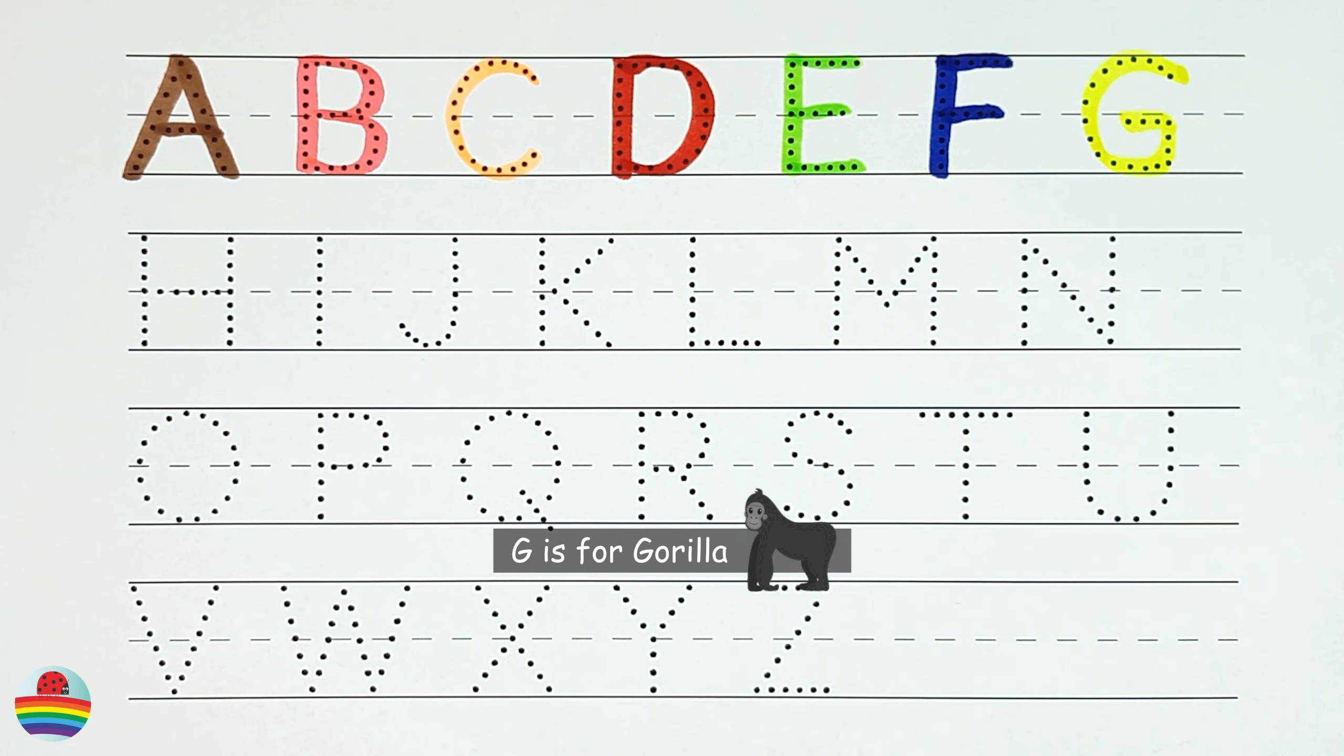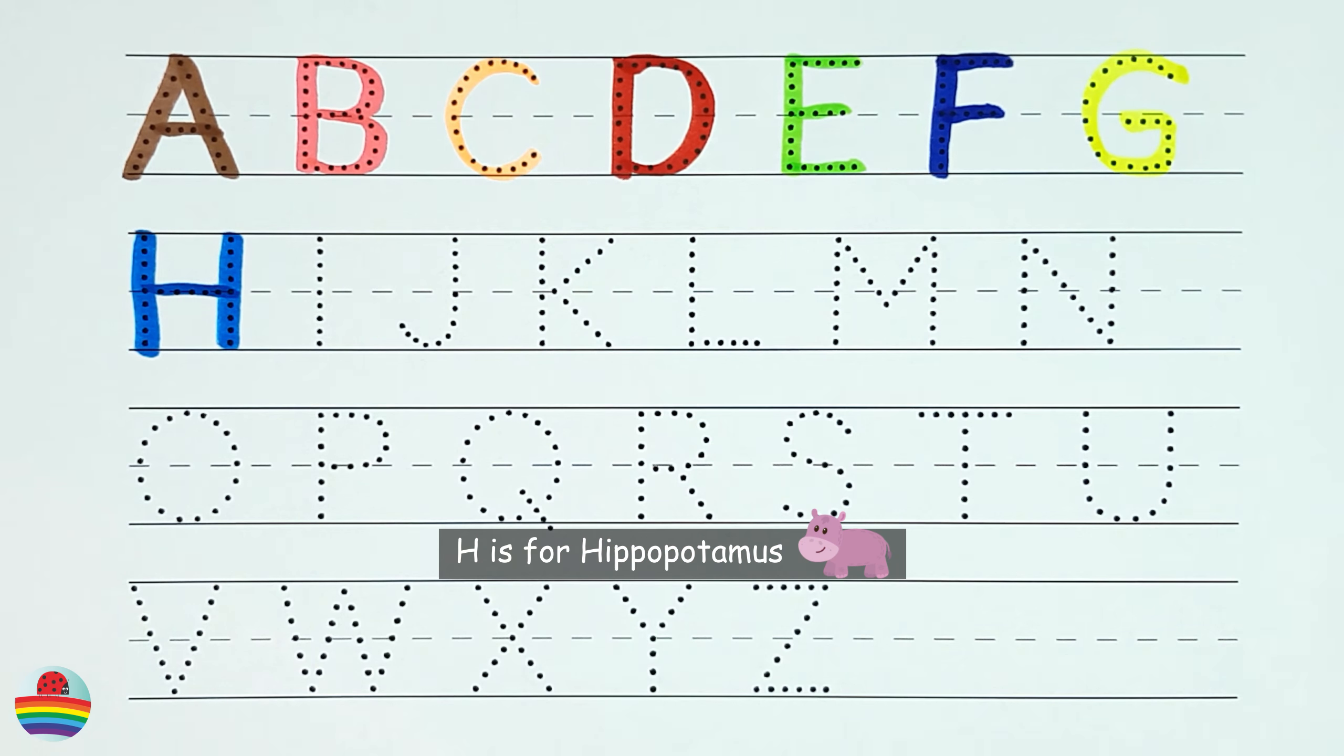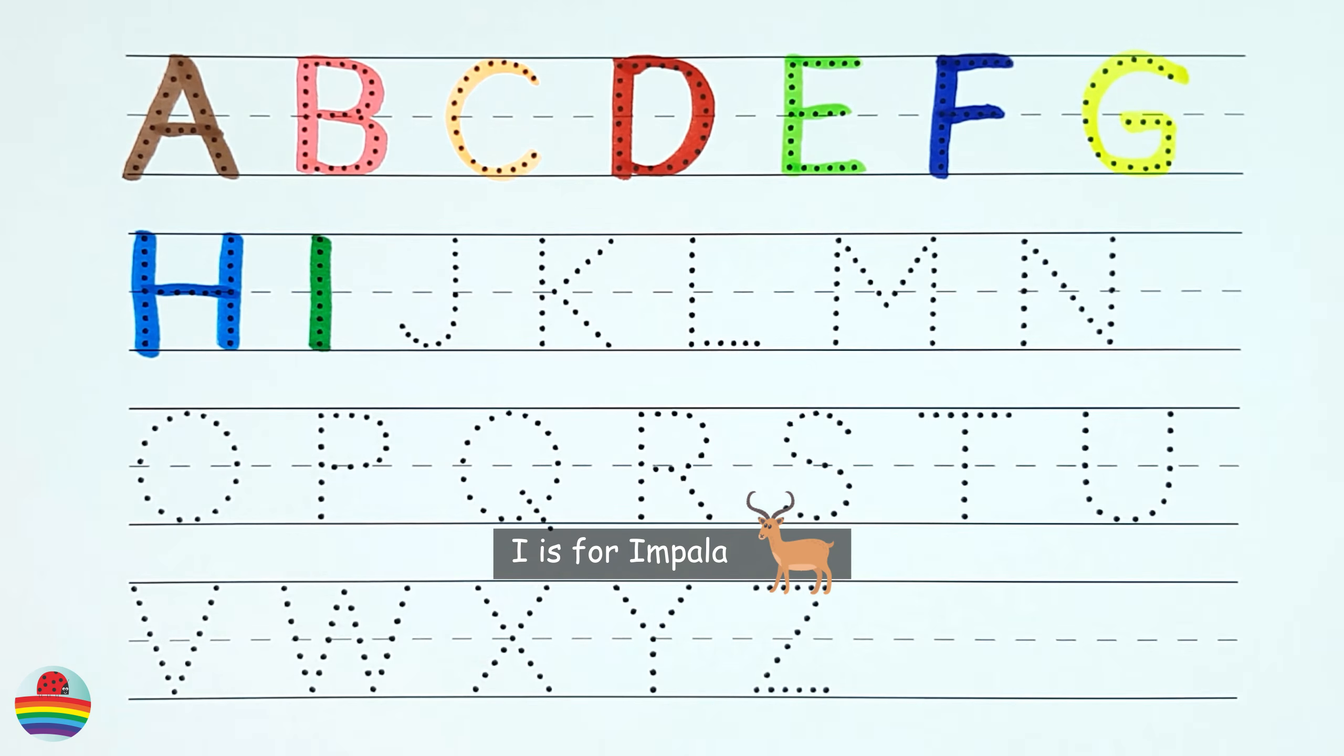G. G is for gorilla. G. H. H is for hippopotamus. H. I. I is for impala. I.